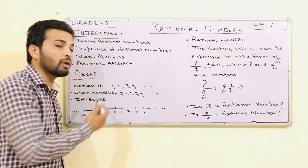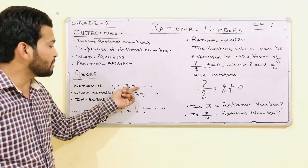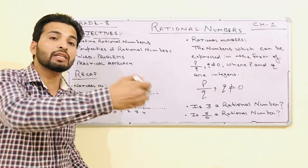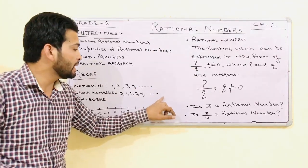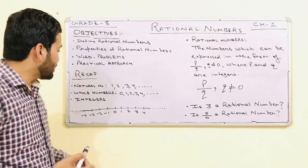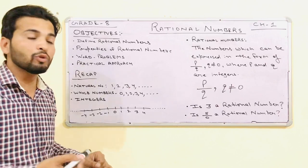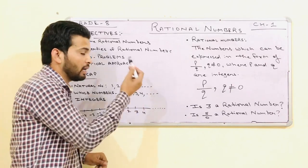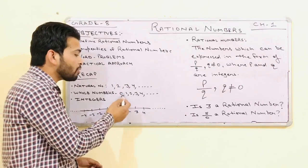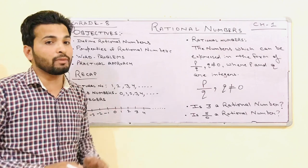Second, we have whole numbers. If we add 0 to the natural numbers, it becomes whole numbers: 0, 1, 2, 3, 4, 5, up to infinite. These are known as whole numbers. The numbers starting from 0 and going to infinite are known as whole numbers.